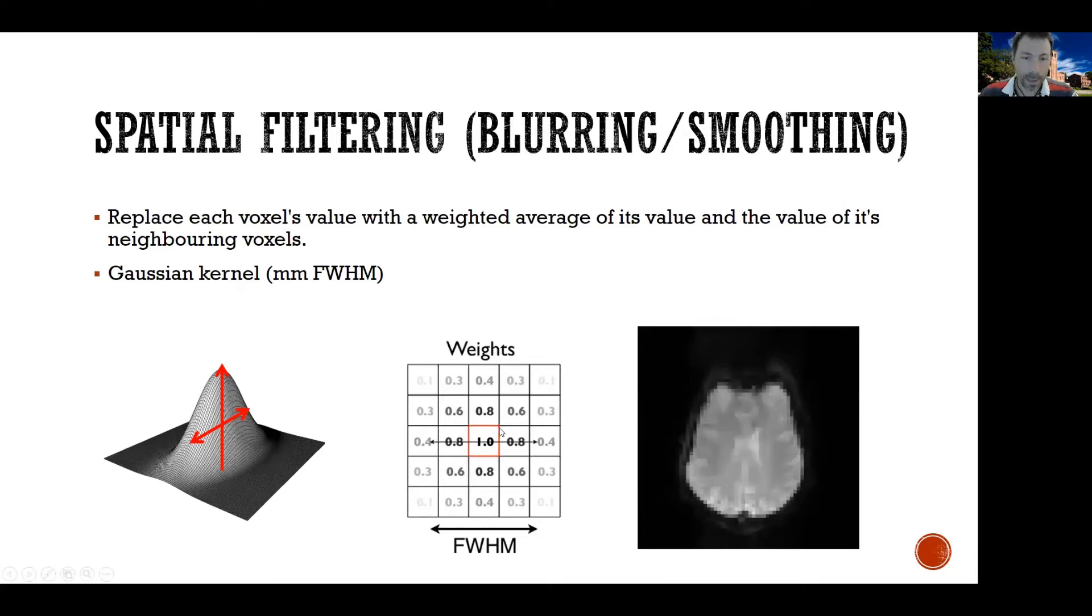If you look at this voxel here, what we would do is replace the value of this voxel with one times the value of the voxel plus 0.8 times the value of the neighbor above, to the right, below and to the left, plus 0.6 times the value of the voxels on the corners, plus 0.4 times the voxels two removed, and so on. In other words, you're replacing the value of each voxel with a weighted average of the voxels around it.